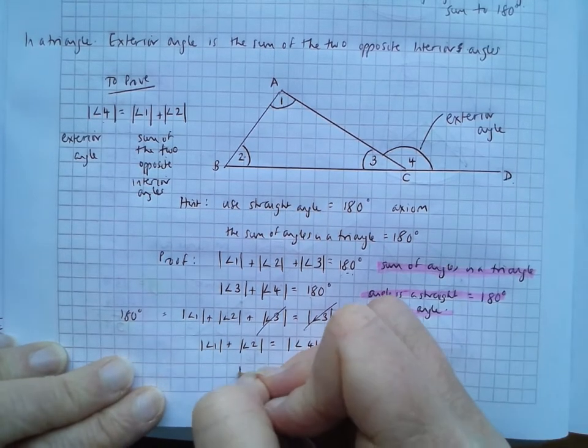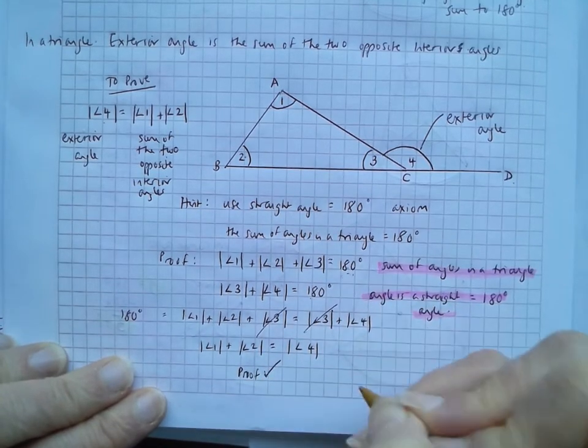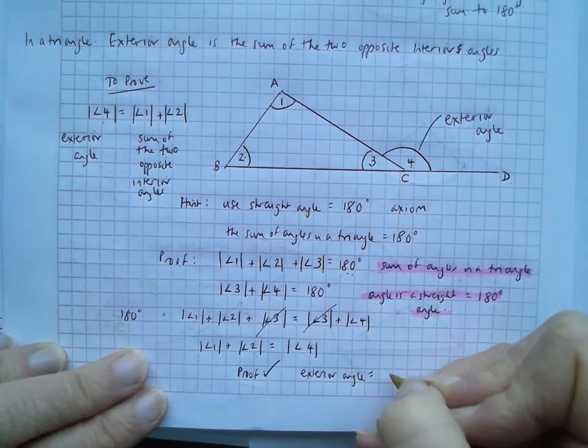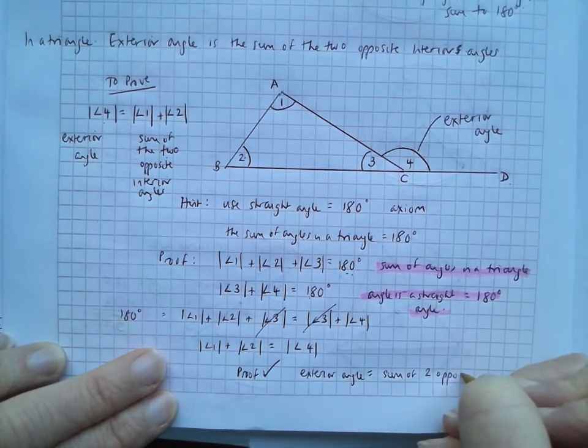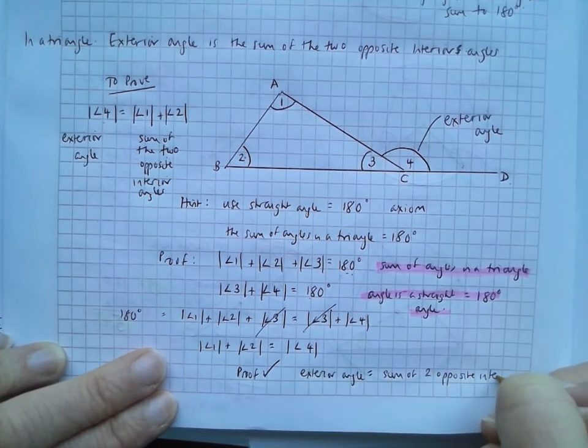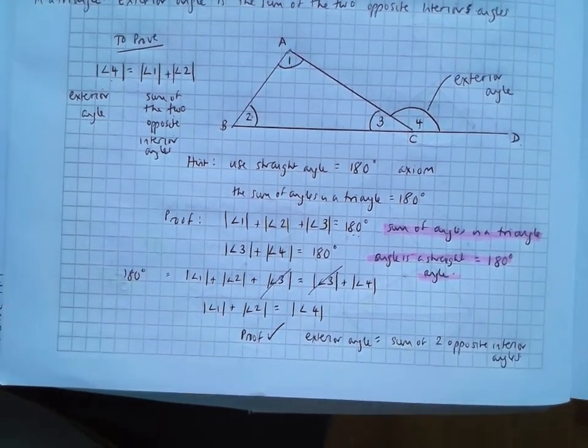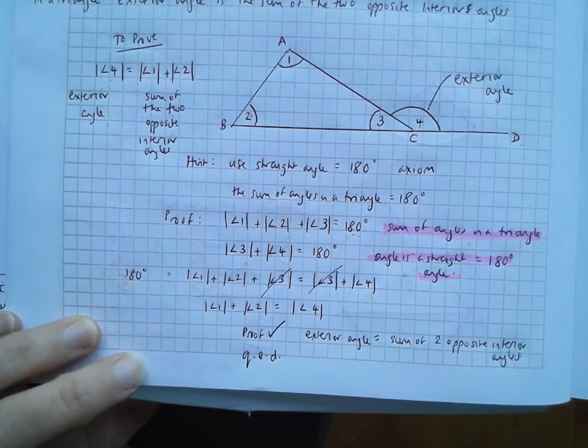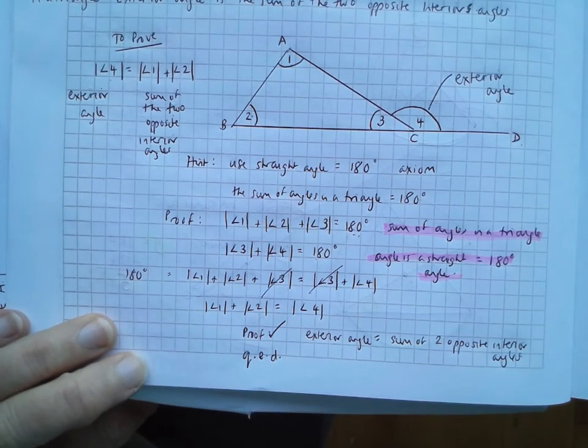So we have proved, proof. Okay. Because this is that the exterior angle is equal to the sum of the two opposite interior angles. Now, instead of writing proof like that, you may know that we write Q.E.D., which is Latin for something or other, which means I've just proved it. Okay. Well done. Did you get it right? I hope so.